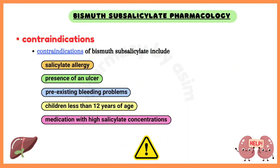Contraindications of bismuth subsalicylate include salicylate allergy, presence of an ulcer, pre-existing bleeding problems, children less than 12 years of age, and patients undergoing oral treatments for gastric and intestinal conditions, as well as those taking anticoagulants, probenecid, methotrexate, or any medication with high salicylate concentrations.